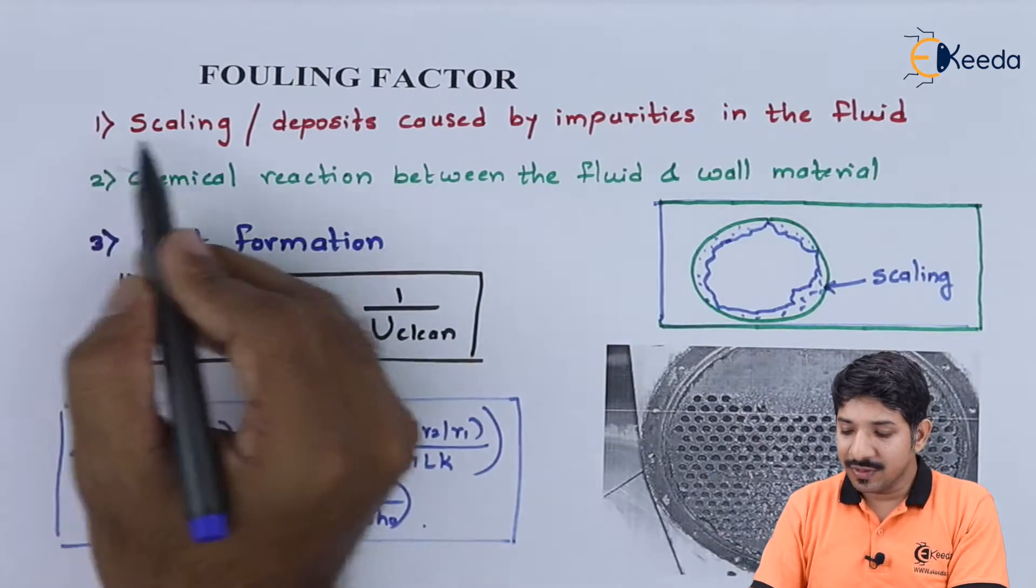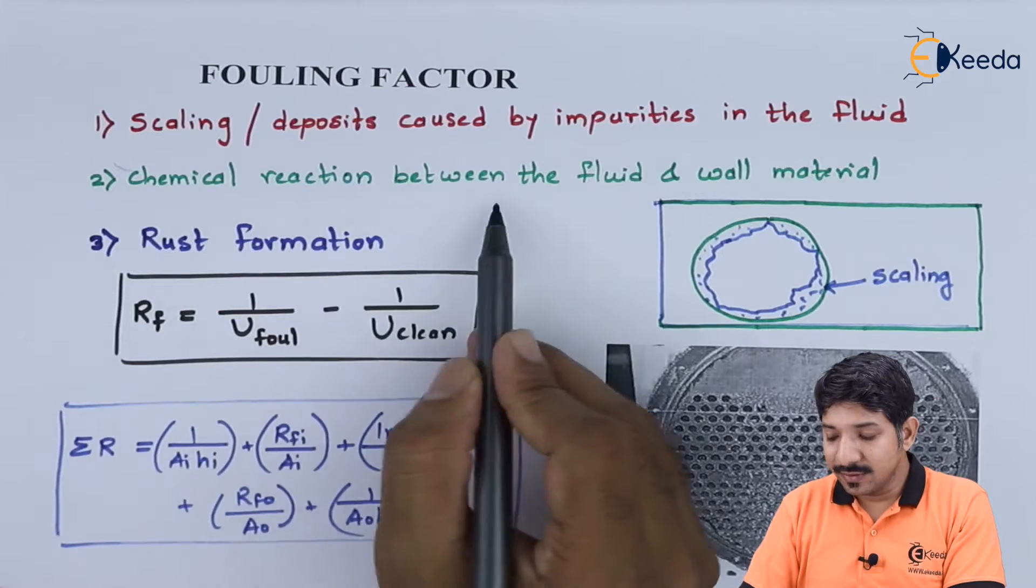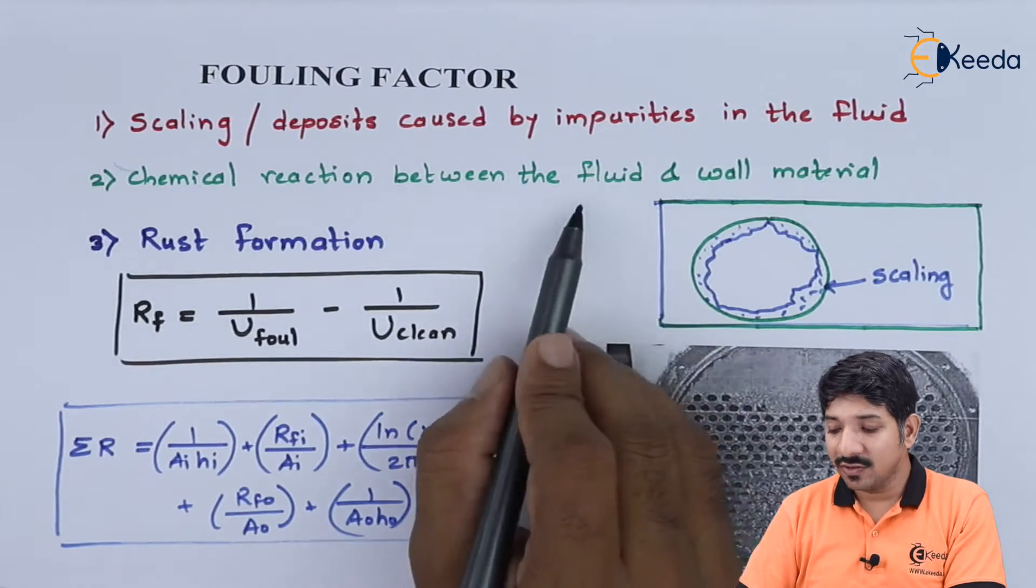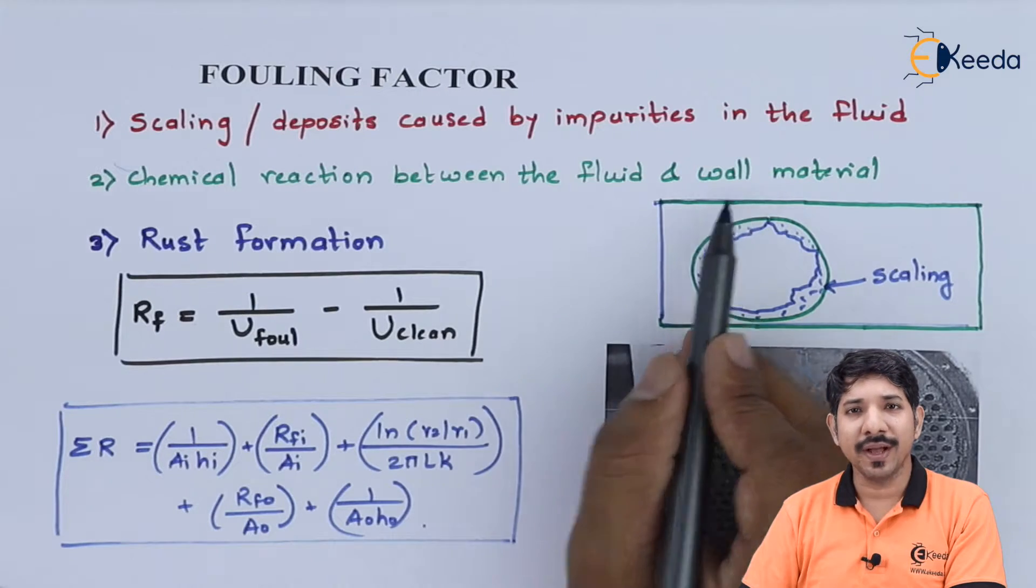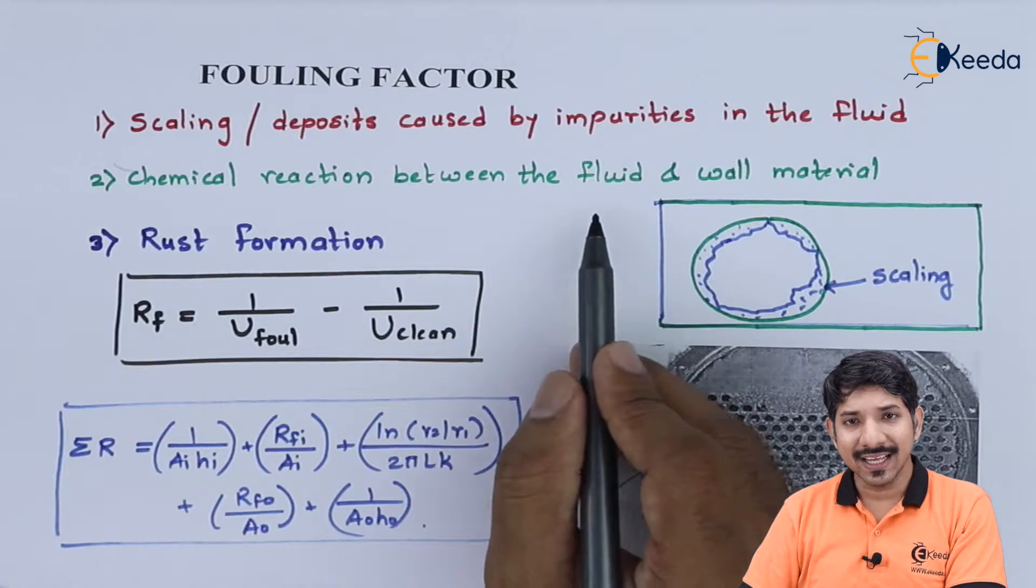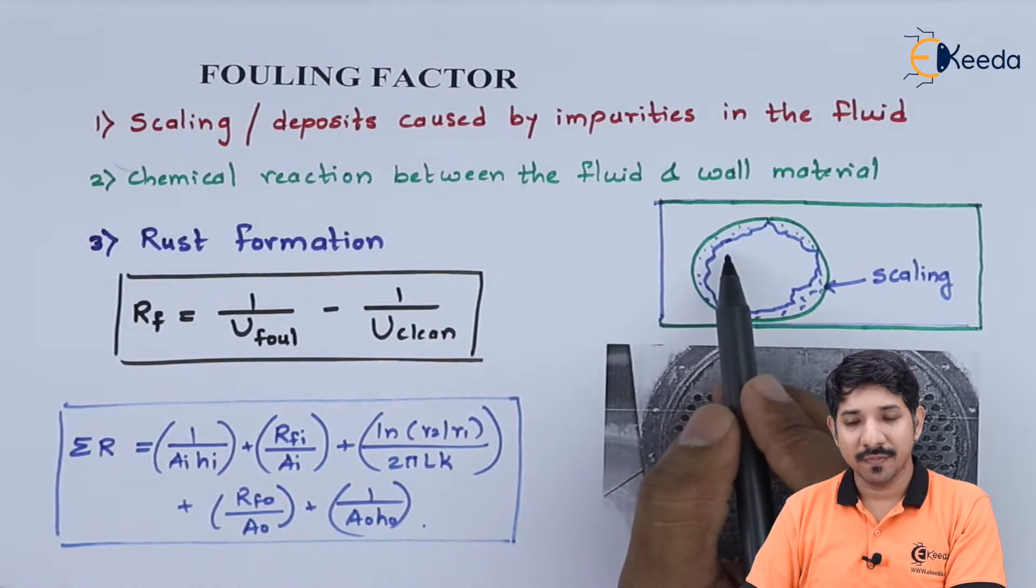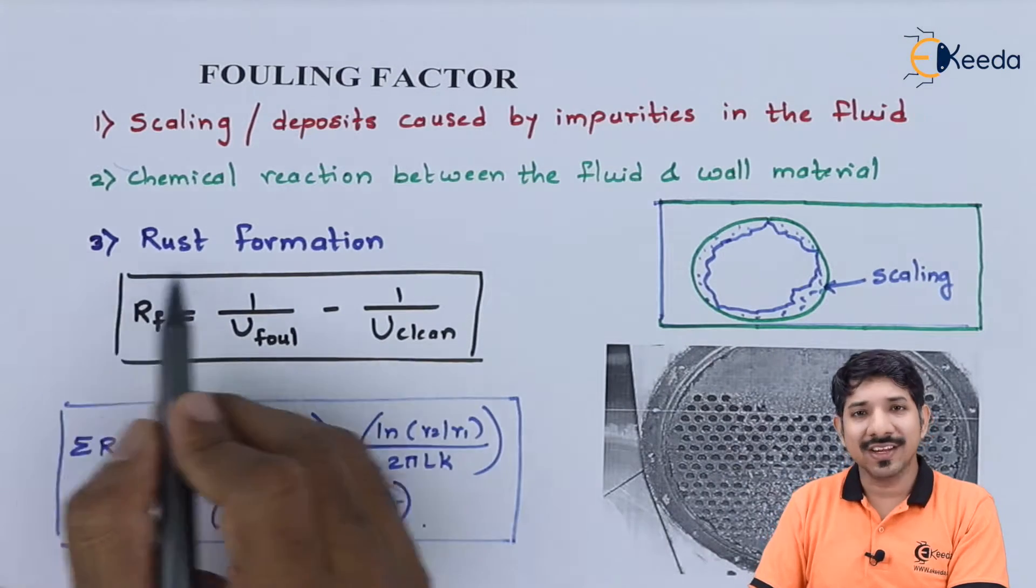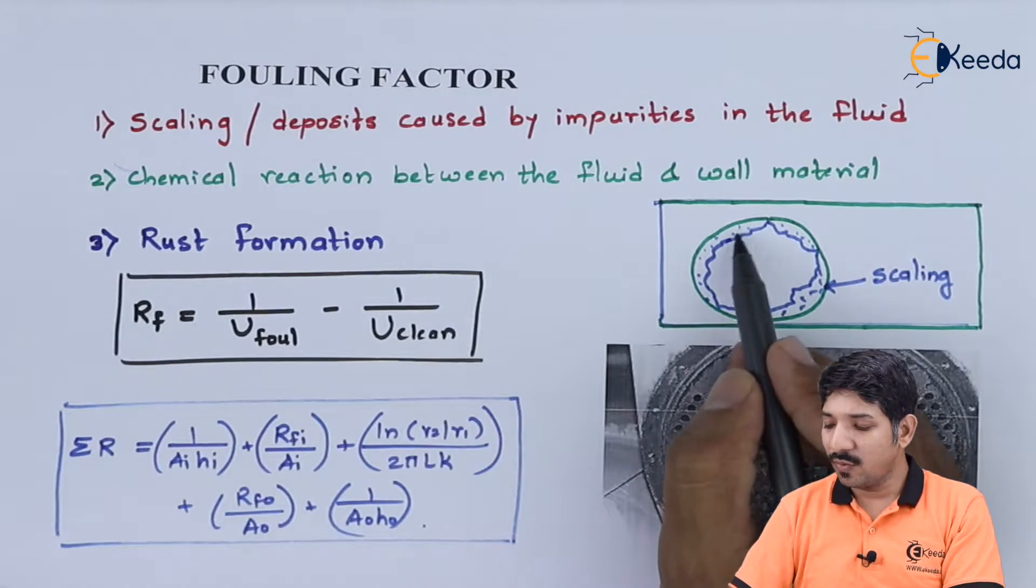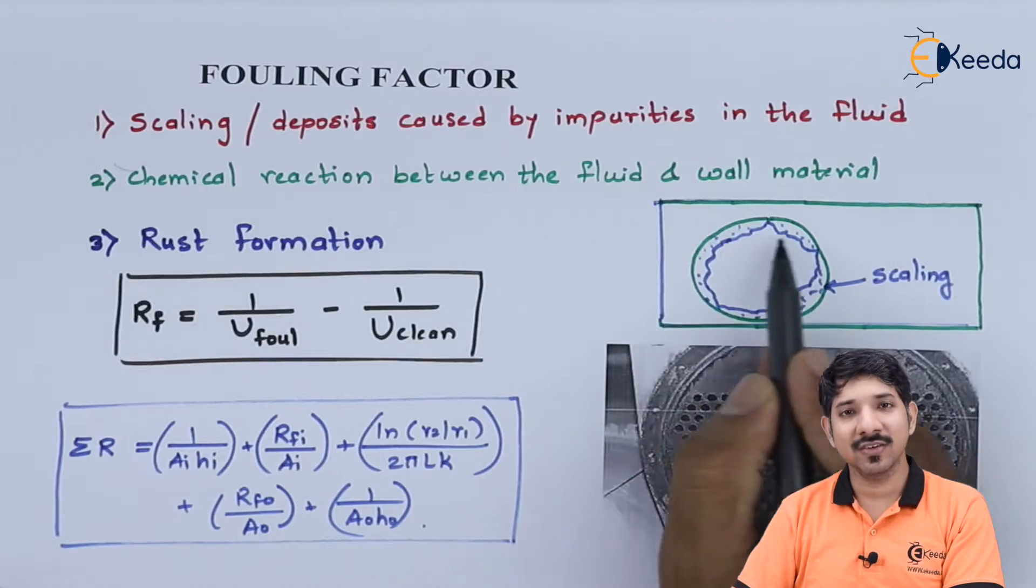This is done due to scaling of particles flowing through the pipe. What are the reasons for this kind of scaling? First one is deposition. Second is the chemical reaction between the fluid and wall material—they may not be compatible with each other and may form compounds. And third is rusting. Due to rust formation also, we can have deposition and reduction in cross-section area.